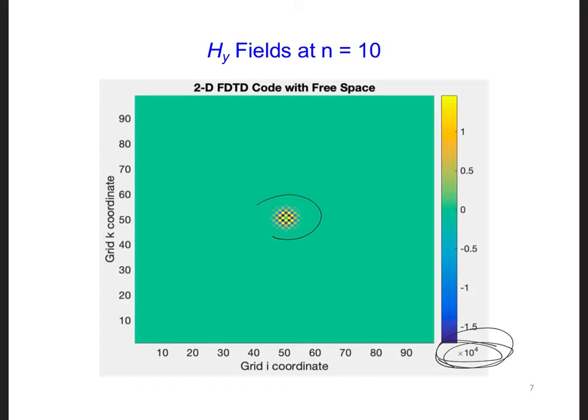Also, we see this checkerboard pattern. What does this mean? The yellows are positive numbers, and the blues are negative numbers.